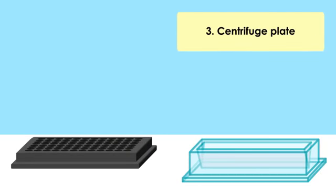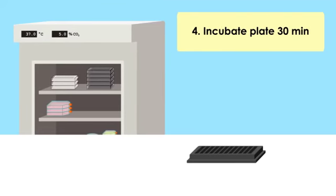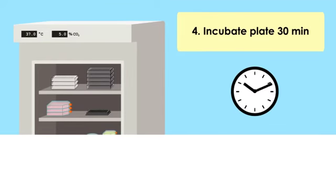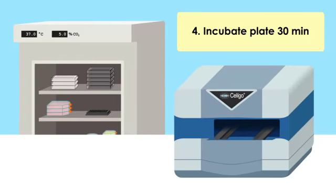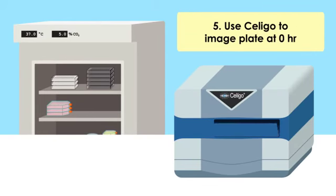Centrifuge the plate to settle the cells to the bottom of the well. Allow the plate to incubate at 37 degrees Celsius for 30 minutes and image the plate to acquire time point zero.